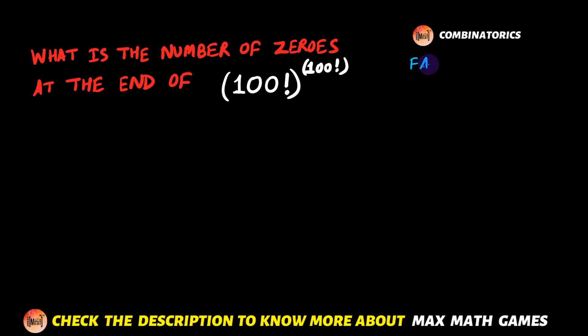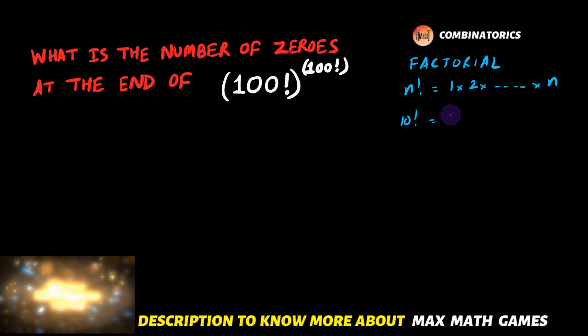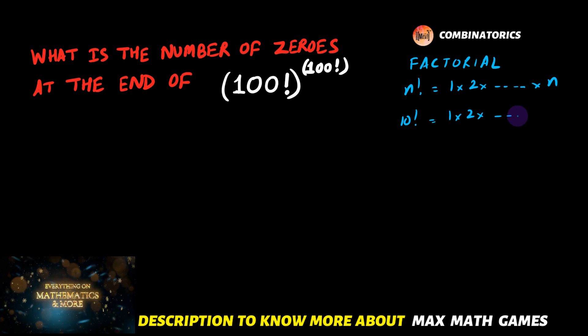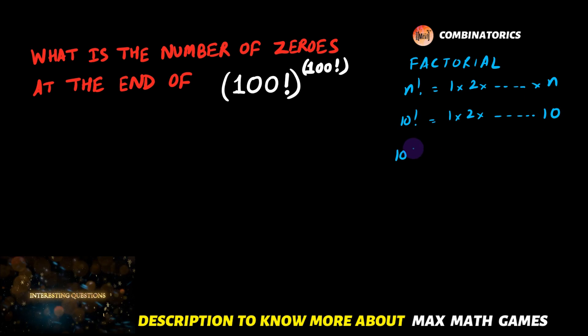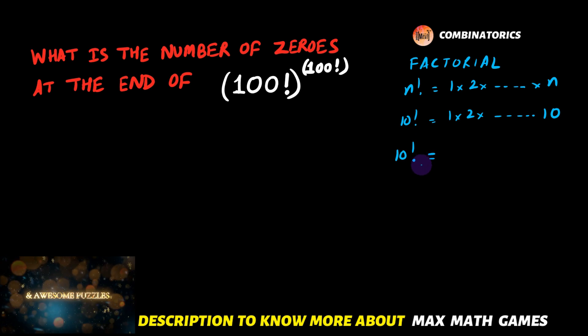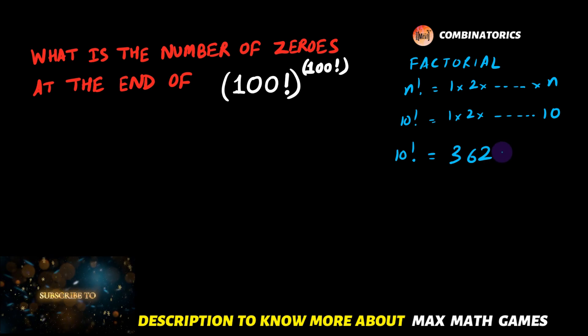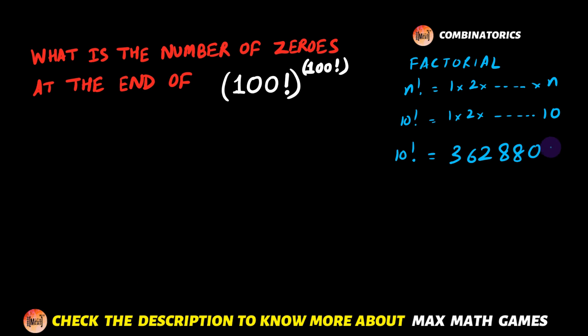Now first of all, let us see a basic concept of a factorial. So n factorial is given by 1 × 2 × ... × n. 10 factorial will be given by 1 × 2 × ... × 10, and 10! actually equals 3,628,800. So we can say that there are two zeros at the end of 10 factorial.